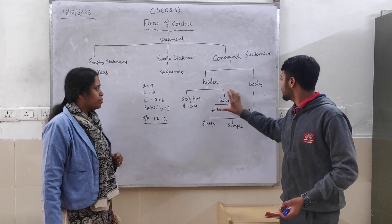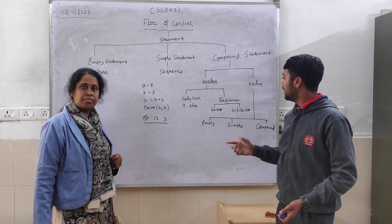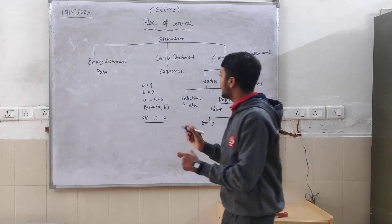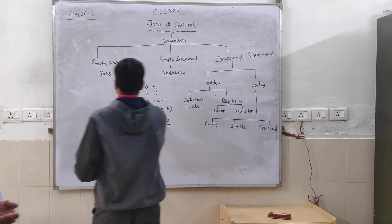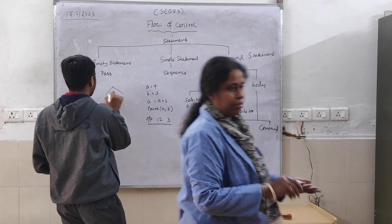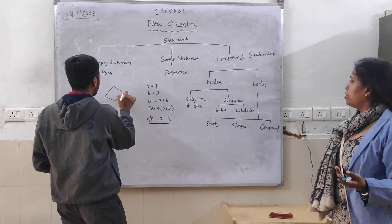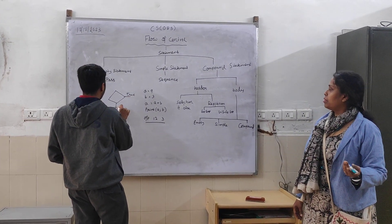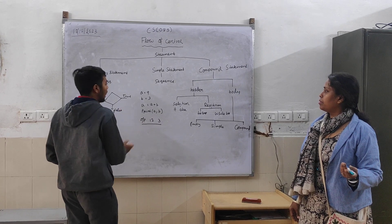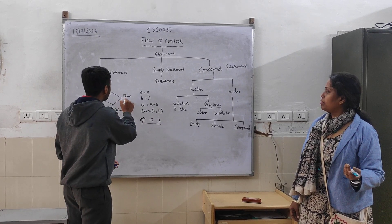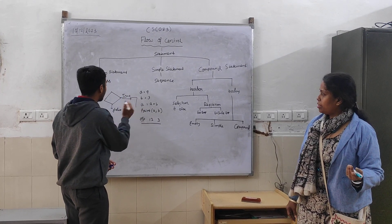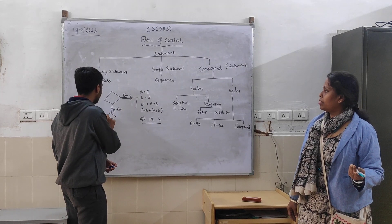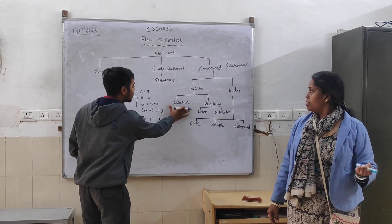Under compound statement, a header has two things: selection and repetition. We have studied selection. If we explain with a diagram — if we are given two options, either true or false. If it is true, then we go ahead and follow those steps. If it is false, then we follow different instructions. This is the selection.